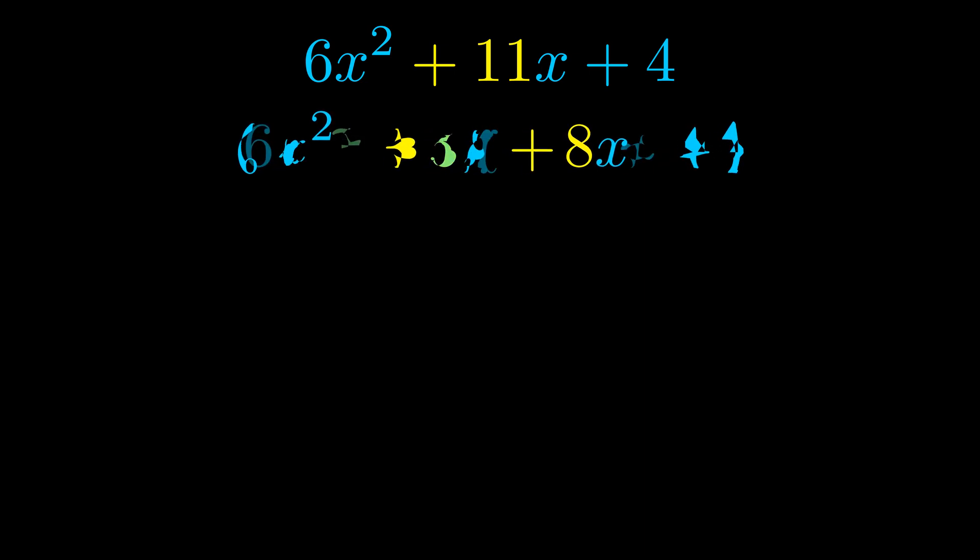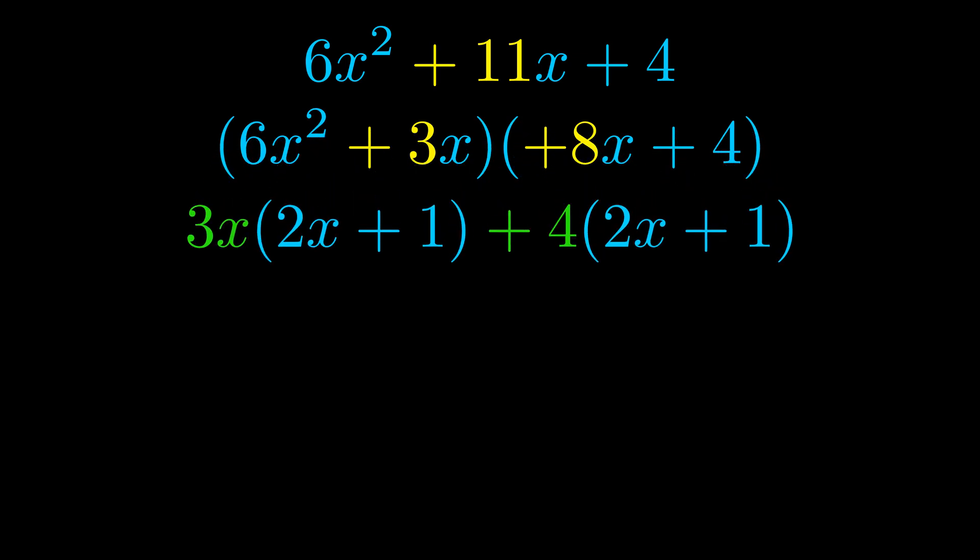Once we've done this we go ahead and we put parentheses around the first term in the last term. And we do that so that we can take the greatest common factor out of both terms. We can see the greatest common factor is now outside in green. Notice also how what remains inside of the parentheses is the same in both cases. The blue values are the same. Those blue values will become one of our factors and we will combine the two green values the GCFs that we pulled out to get the other one. And that is our fully factored equation.